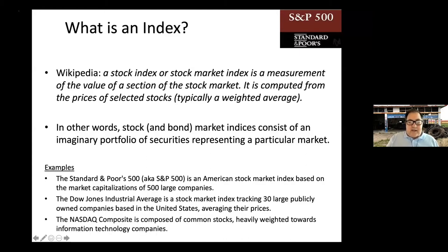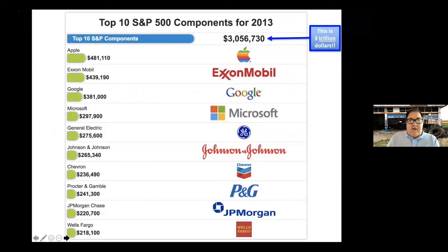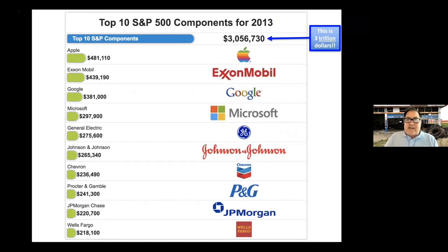Another index is the Nasdaq Composite, composed of common stocks weighted very heavily toward information technology companies. Going back seven years to 2013 — not very far, several years after the big recession and into the 2008 recovery — the top ten S&P 500 companies were quite different from today.